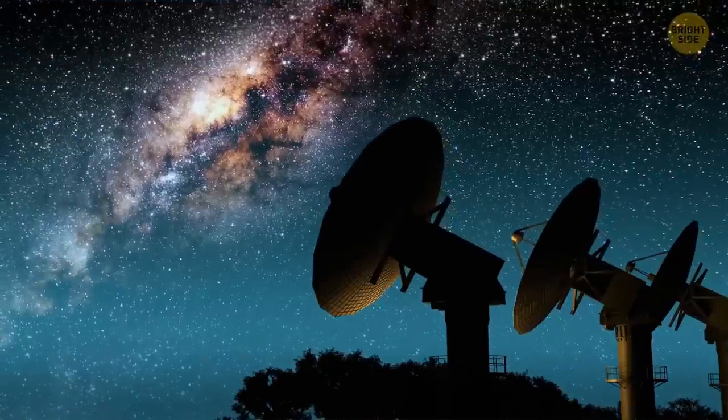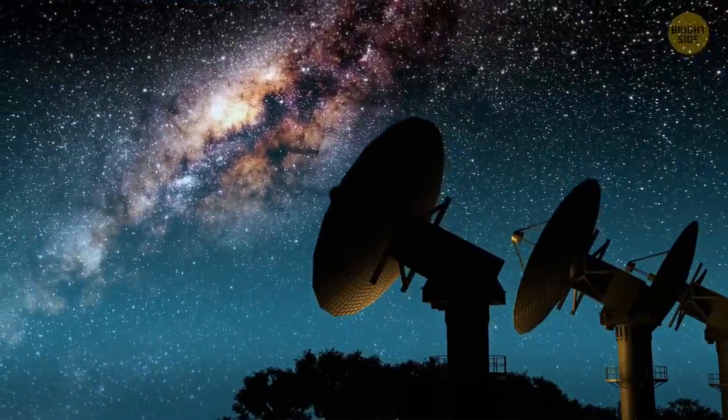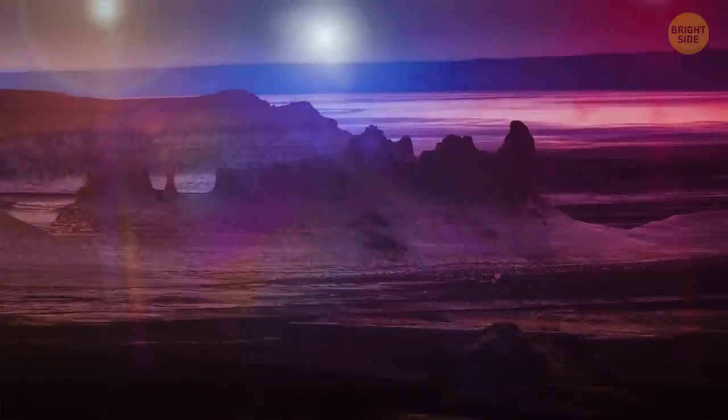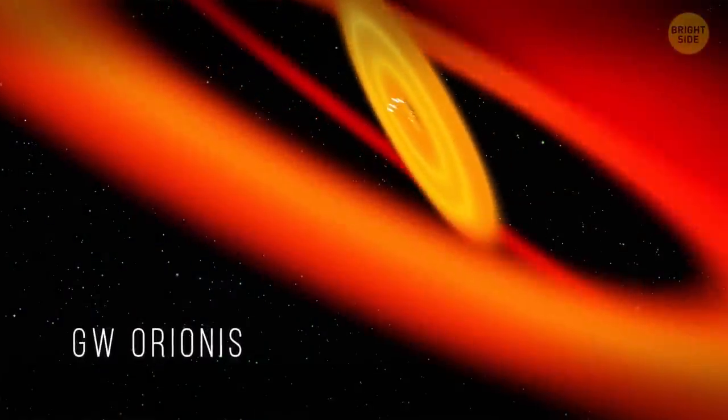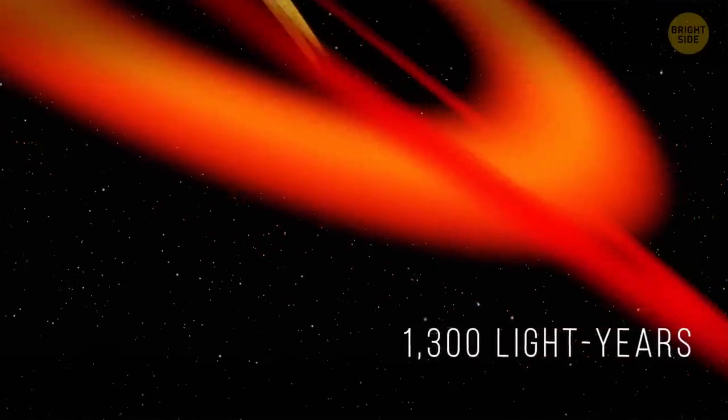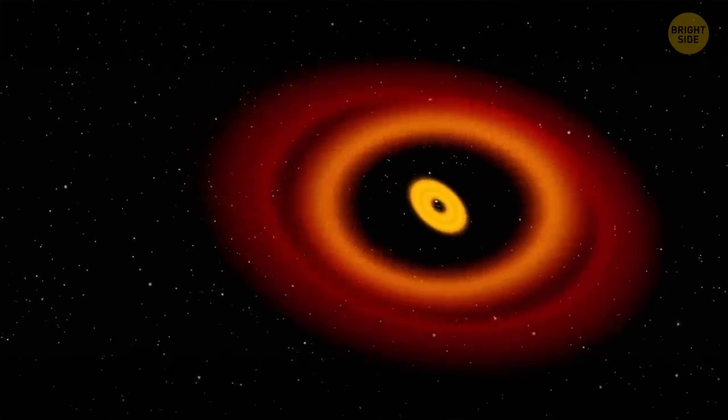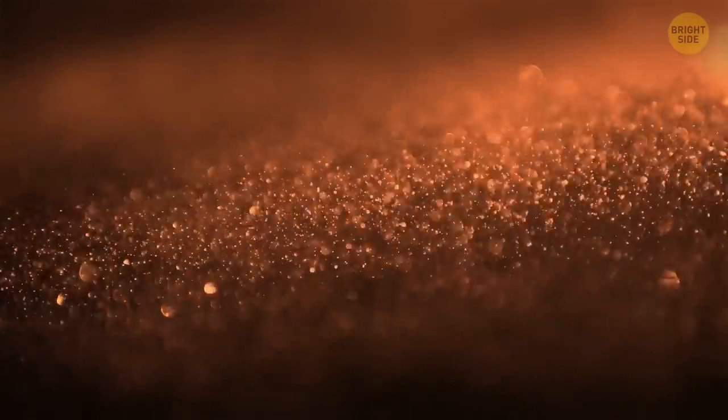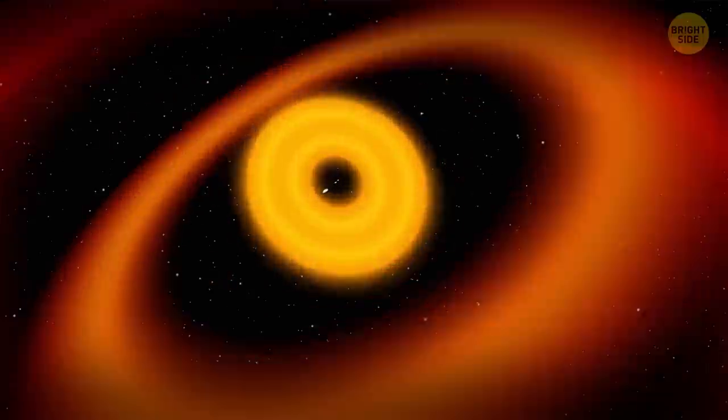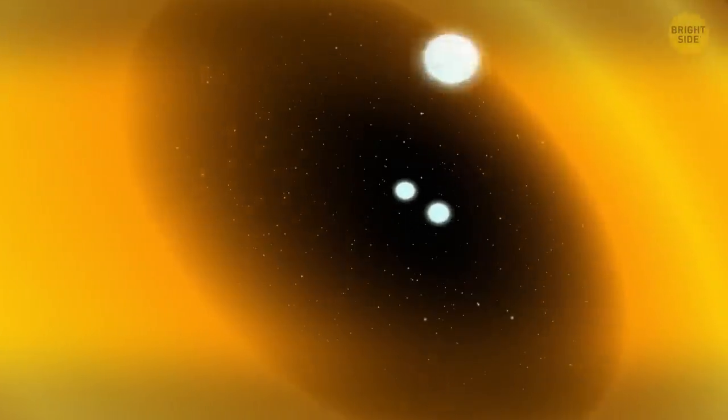But astronomers seem to have found something rarer and more bizarre. There might be a planet that orbits three stars at once. The GW Orionis star system is around 1,300 light-years away from our planet. It's composed of three orange rings. They're made of dust and nested inside one another. In the center of this system, you can see three stars.